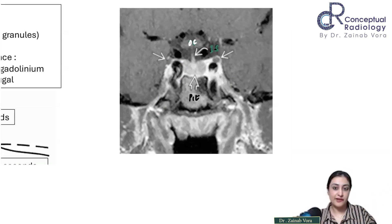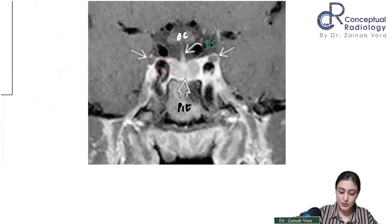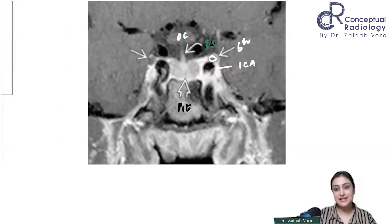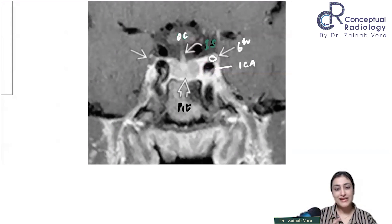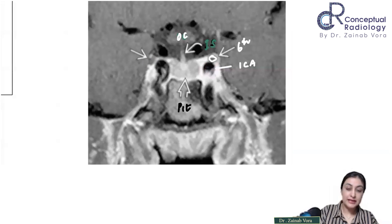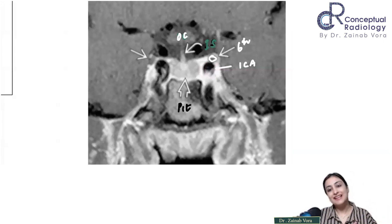What are the contents of the cavernous sinus? Very important. There are two structures within the cavernous sinus itself: the flow void corresponding to the cavernous segment of the ICA, and the sixth cranial nerve running within it. In the lateral wall lie three other cranial nerves — the third, fourth, and V1 — which may be visible on very high-resolution thin-section images but are not well seen on standard post-contrast images.